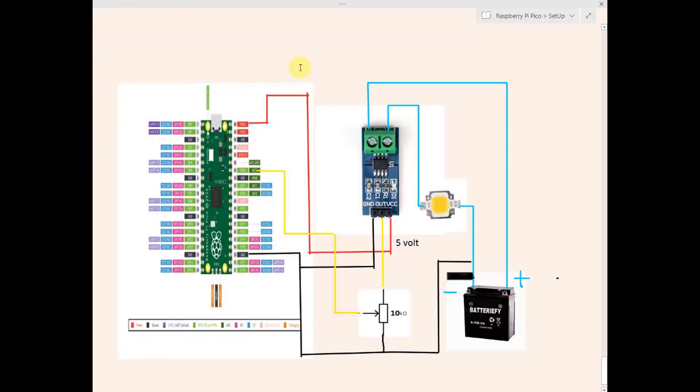So this is the circuit diagram for the ACS712 current sensor. Here is the external battery and here is the load. We have placed this sensor in series with the external battery and you can see the connections over here.